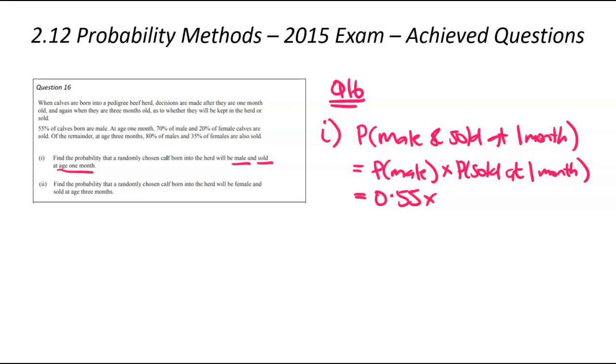We're going to times by the probability of sold at one month. That's that 0.7 there. We get into our calculator, plug that in, 0.385% of the herd will be males that are sold at that one month mark.